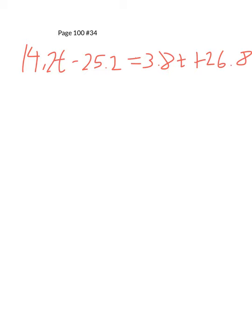One strategy that you can use to eliminate the decimal, which may make the equation a little easier to solve, is to multiply every term so that the decimals go away. So in this problem, if I multiply everything by 10, using the distributive property, if I multiply every term by 10, let's go ahead and multiply. This is going to be 142t minus 252 equals 38t plus 268.